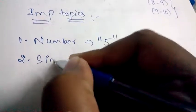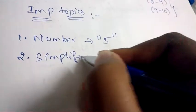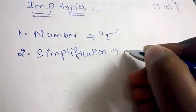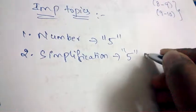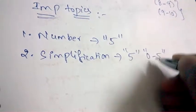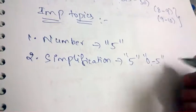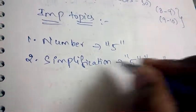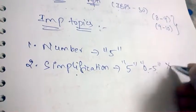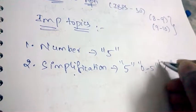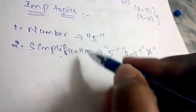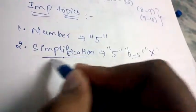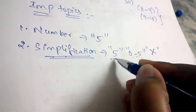Next important topic is Simplification. Coming to Simplification, they may ask five questions, or they may ask zero to five questions. They may ask one, two, three, or five questions from this topic, or they may not ask any question from this topic. It depends upon the question paper. The maximum number of questions which will appear from this topic will be five.